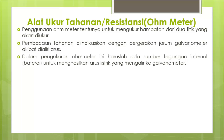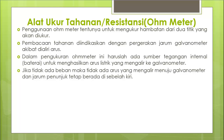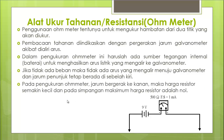Sumber tegangan dalam ohmmeter biasanya berupa baterai internal. Jika tidak ada sumber tegangan, jarum tidak akan bergerak. Pada ohmmeter, jika jarum bergerak ke kanan, harga resistansi semakin kecil. Pada simpangan maksimum (jarum paling kanan), harga resistansi bernilai nol. Ini membedakan ohmmeter dengan pengukuran arus maupun tegangan, di mana skala nol berada di kanan dan nilai tidak terhingga di kiri.